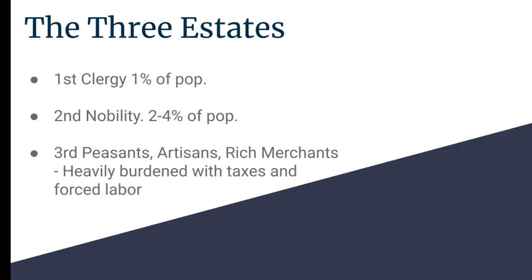Now let's take a look at the demographic splits in France. They were split up into three estates. The first estate was the clergy, which made up less than one percent of the population, but the Catholic Church in France owned 20 percent of the land.